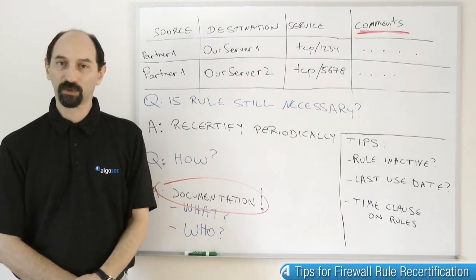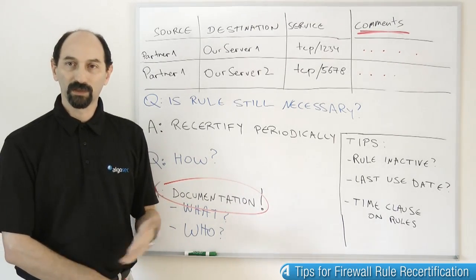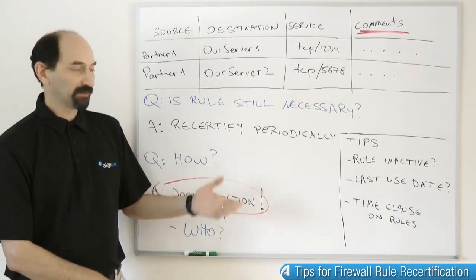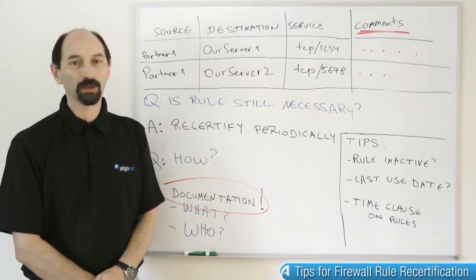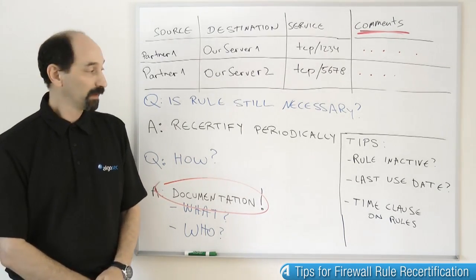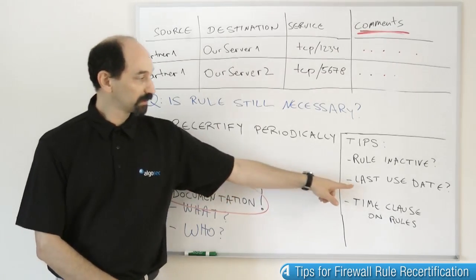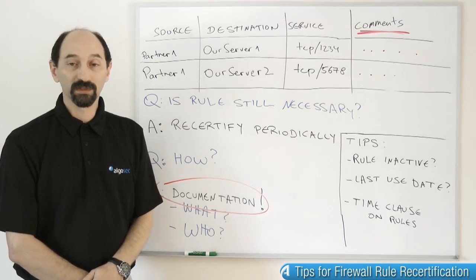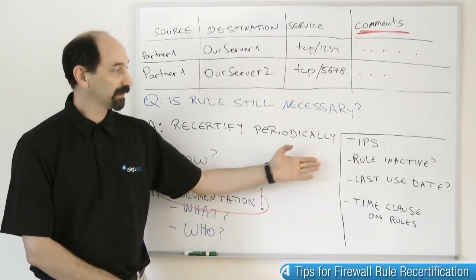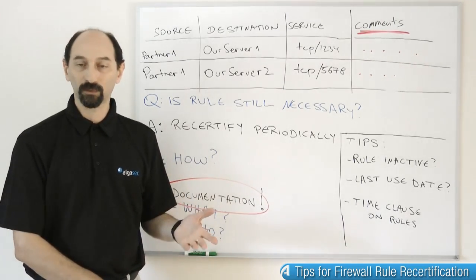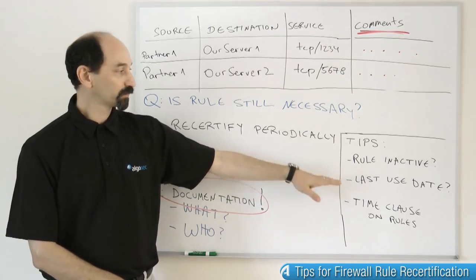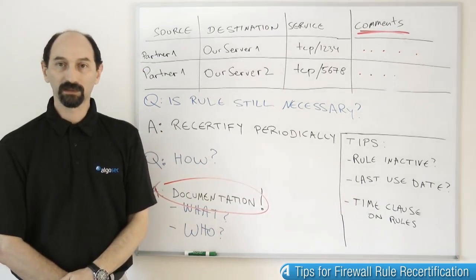Unfortunately, not all of us live in a perfect world and we have to live with systems that were created long before we joined the team, with legacy systems involved. So how do we discover if an old rule that is not properly documented is still necessary? Here are a few practical tips. A key piece of information is the rule usage: when was that rule last used, how often is it used, is it maybe completely unused? There are systems that can extract this usage information from the firewall hit counters or from the firewall logs and give you a report on which rules are inactive or which rules have not been used in a long time. These are obvious candidates for removal.